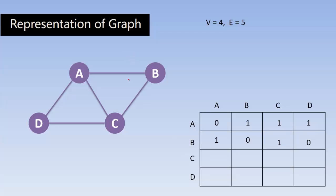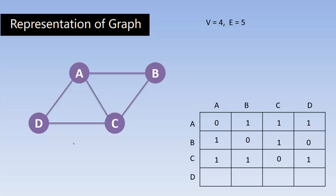For vertex C: C to A — there is a connection, so 1. C to B — 1. C to C — no, so 0. C to D — 1. For vertex D: D to A — yes, so 1. D to B — no direct connection, so 0. D to C — yes, so 1. D to D — no, so 0. This is the complete adjacency matrix for this graph.